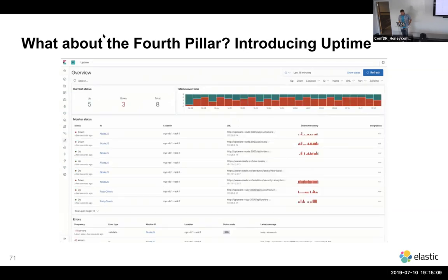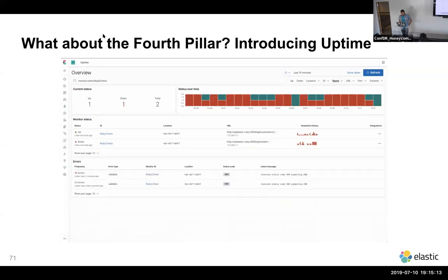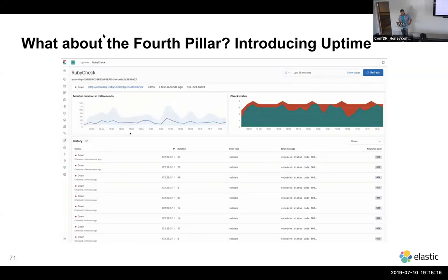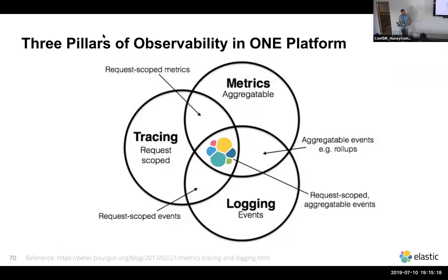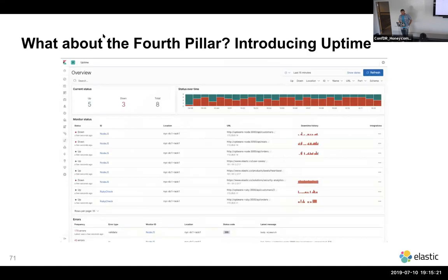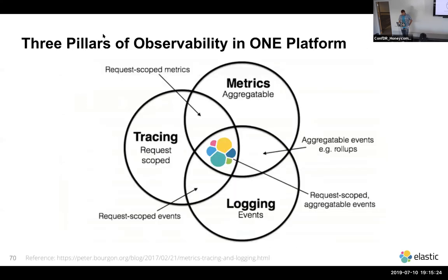That was my last slide. The three pillars of observability are metrics, logging, and tracing. Heartbeat and uptime monitoring could be a fourth pillar. The uptime monitoring uses Heartbeat as a Beat. Another useful use case is monitoring internal TLS certificates — for a large enterprise it's hard to track when certificates are expiring, and Heartbeat supports that as well.